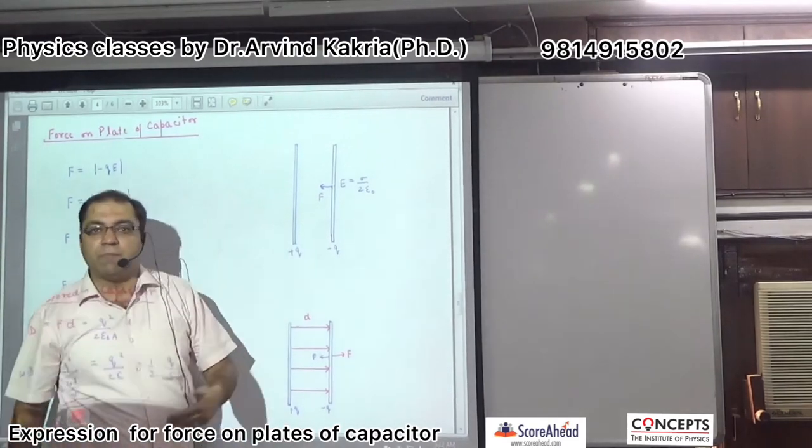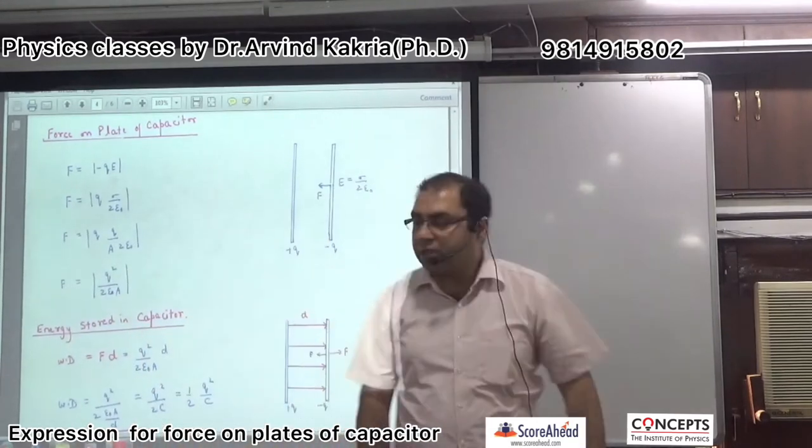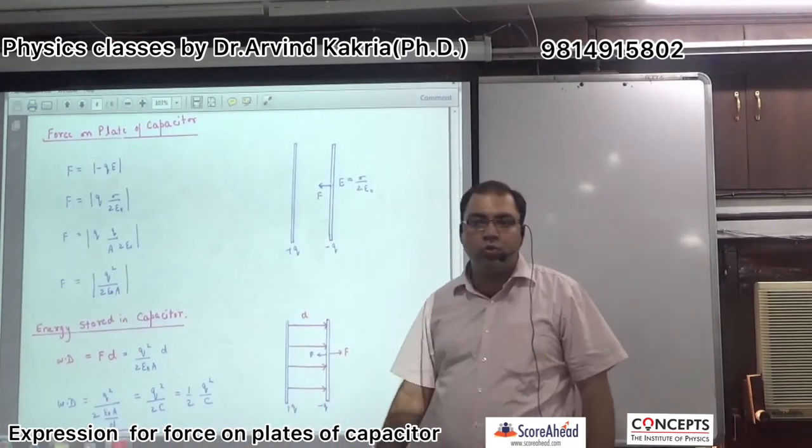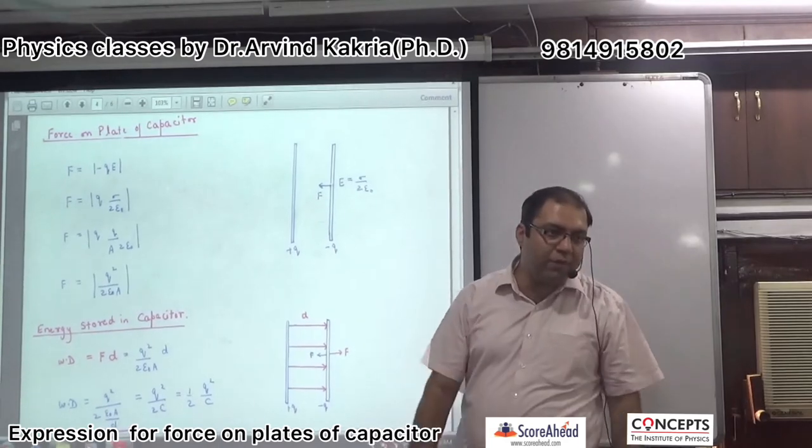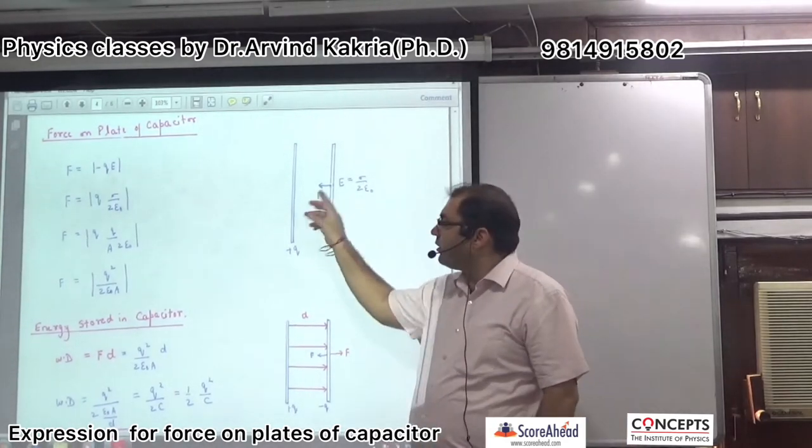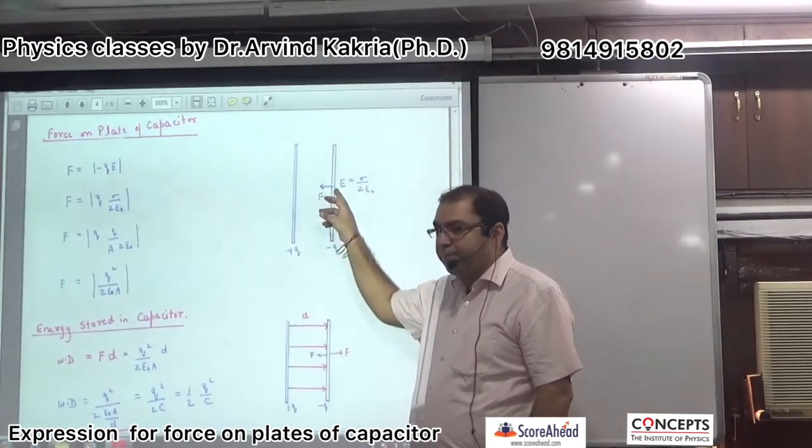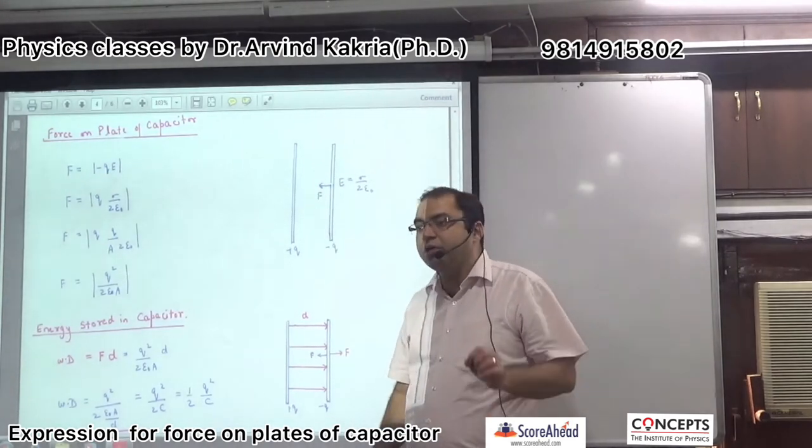Because this positively charged plate brings E to its own. And what is E's formula? Sigma divided by 2 epsilon naught. So, this is the value of E. Now, this is E. So, what will force experience? Q into E.